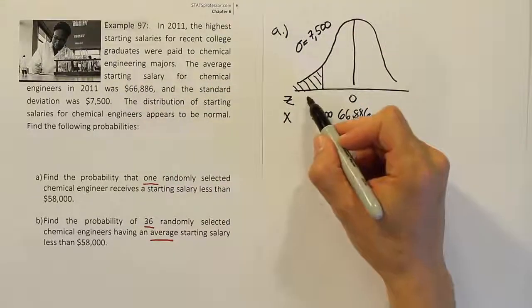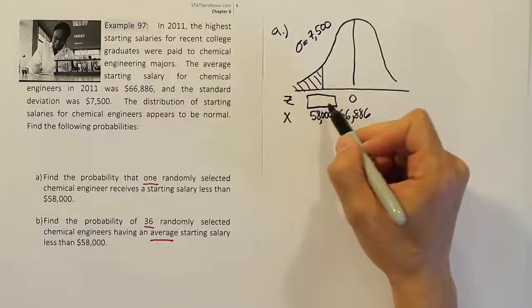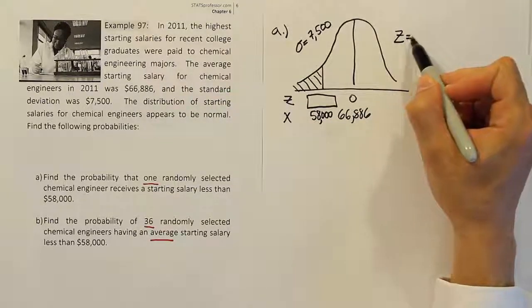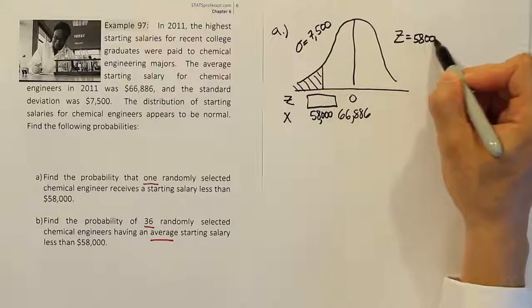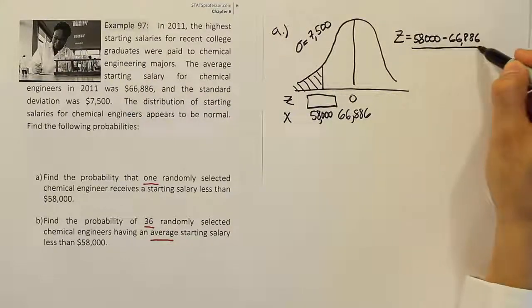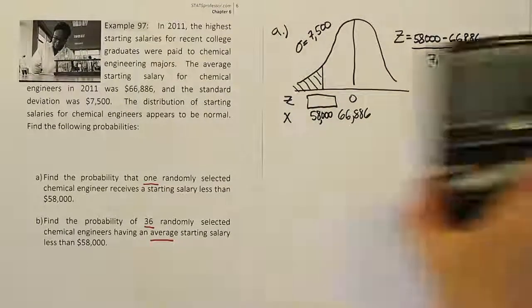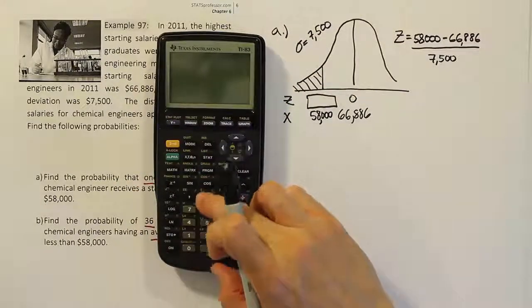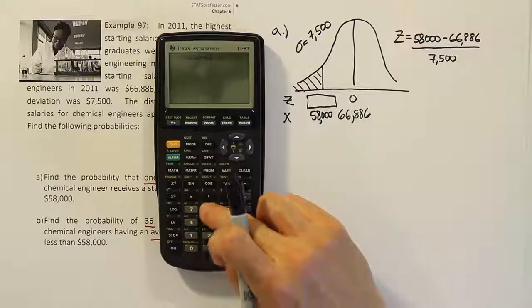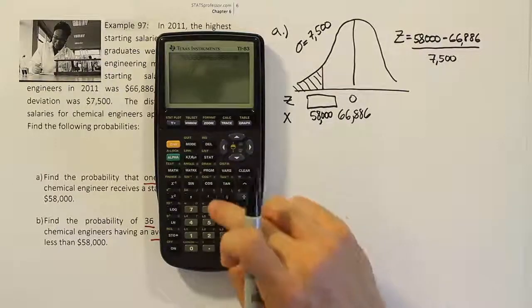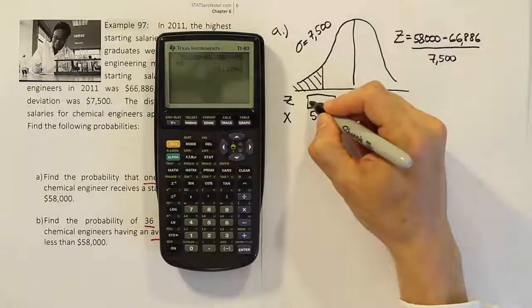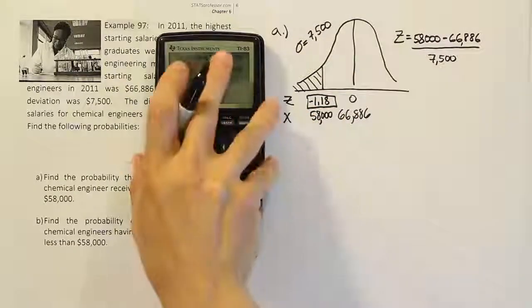All right, now that you have those numbers, all we have to do is get a z-score. Once we calculate the z-score, we're going to look it up on the z-chart to get the area in the tail to finish. The z-score for 58,000 is 58,000 minus 66,886, then we will divide that by 7,500. So the top in parentheses, we're going to have 58,000 minus 66,886, close the parentheses, divide by 7,500. So I do that and I get negative 1.18. That'll be good enough to go look up our values in our table.